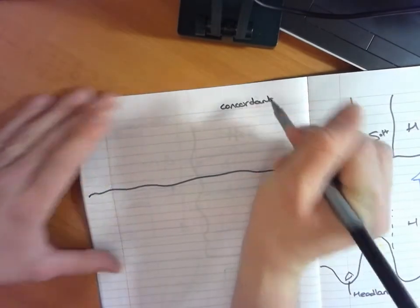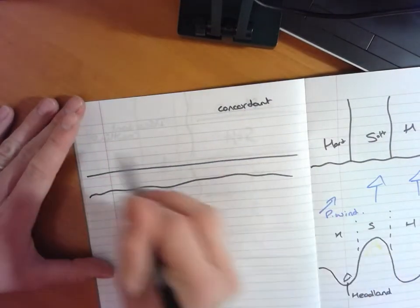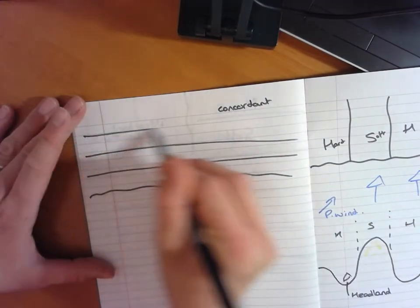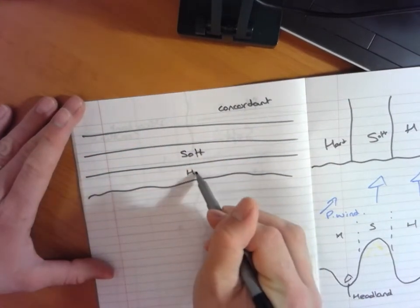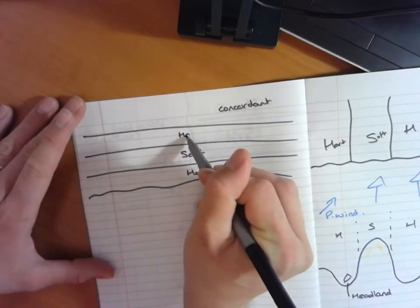I will see these bands running parallel. So I may see a harder, softer, a harder rock again, and a softer rock.